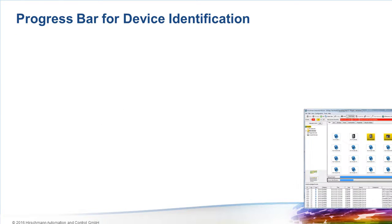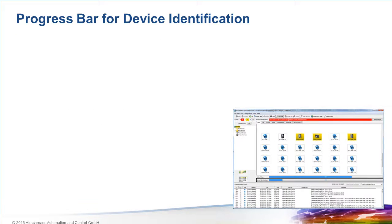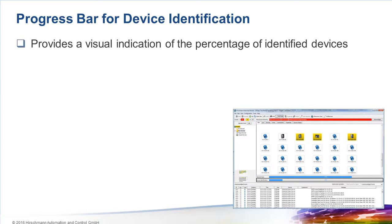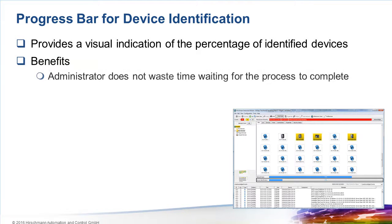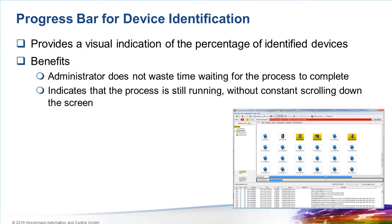Another new feature is the progress bar. Industrial HiVision will scan an address range and determine whether a device is attached to the network — in other words, if a device responds to a ping, it will be added to Industrial HiVision. When Industrial HiVision runs a scan, every available device is shown in the topology map, and a progress bar shows the progress of the scan.